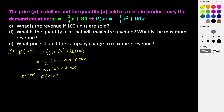That sum will be $5,500. So if we sold 100 units, we would make $5,500 in revenue. That's part C.